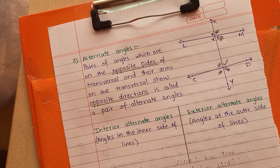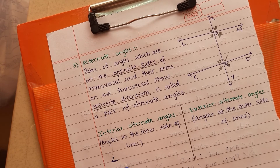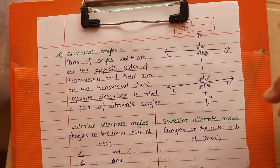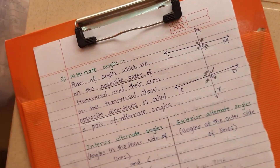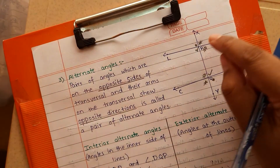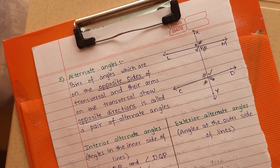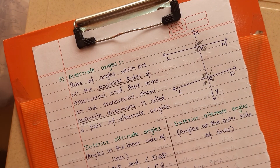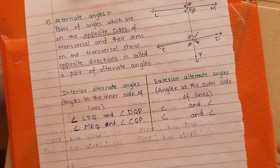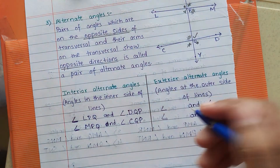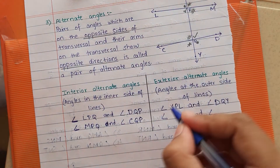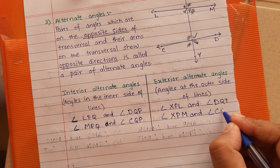So the interior alternate angle pairs are: angle LPQ and angle DQP, and angle MPQ and angle CQP. The exterior alternate angle pairs are: angle XPL and angle DQY, and angle XPM and angle CQY.